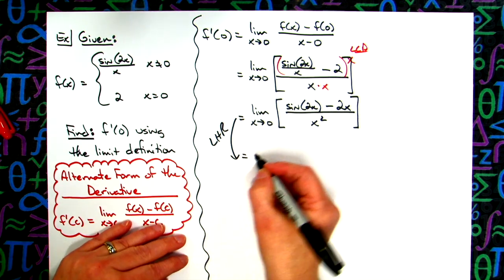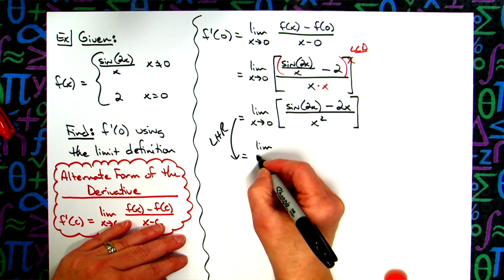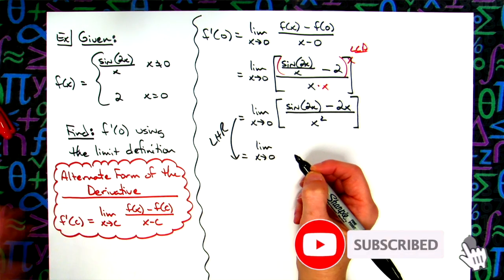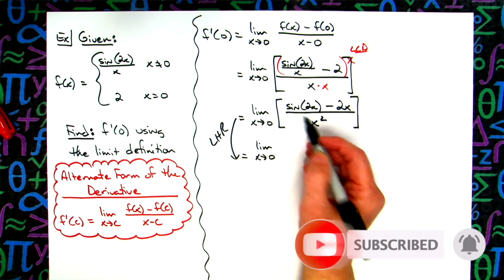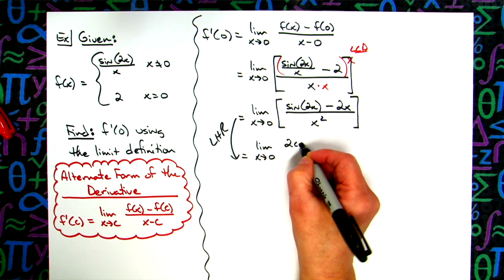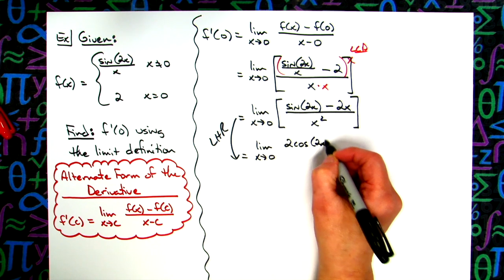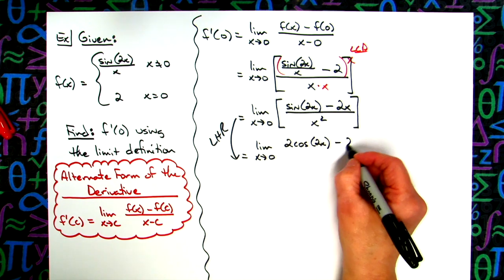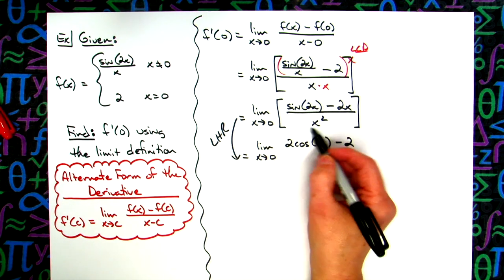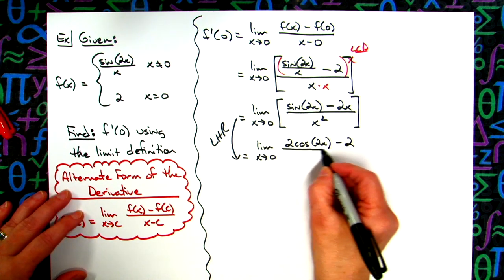So we'll still have our limit notation, we'll have the limit as x approaches 0. So when we take the derivative right here it's going to be 2 cosine of 2x, be sure to include that chain right there. Derivative of 2x is just going to be 2, derivative on the bottom there is going to be 2x.